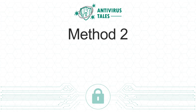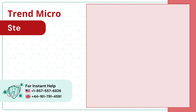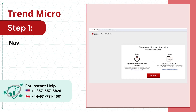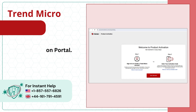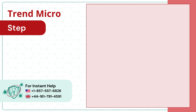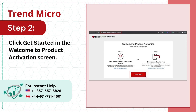Method 2: From Activation Portal. Step 1: Navigate to the Trend Micro Activation Portal. Step 2: Click Get Started in the Welcome to Product Activation screen.